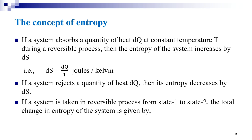If a system is taken in a reversible process from state 1 to state 2, then the total change in entropy of the system is given by the integration of ds from state 1 to state 2, which equals the integration of dq/T from state 1 to state 2. This equals S2 minus S1, where S2 minus S1 represents the change in entropy. Hence, the change in entropy can be measured by integrating from one state to another.